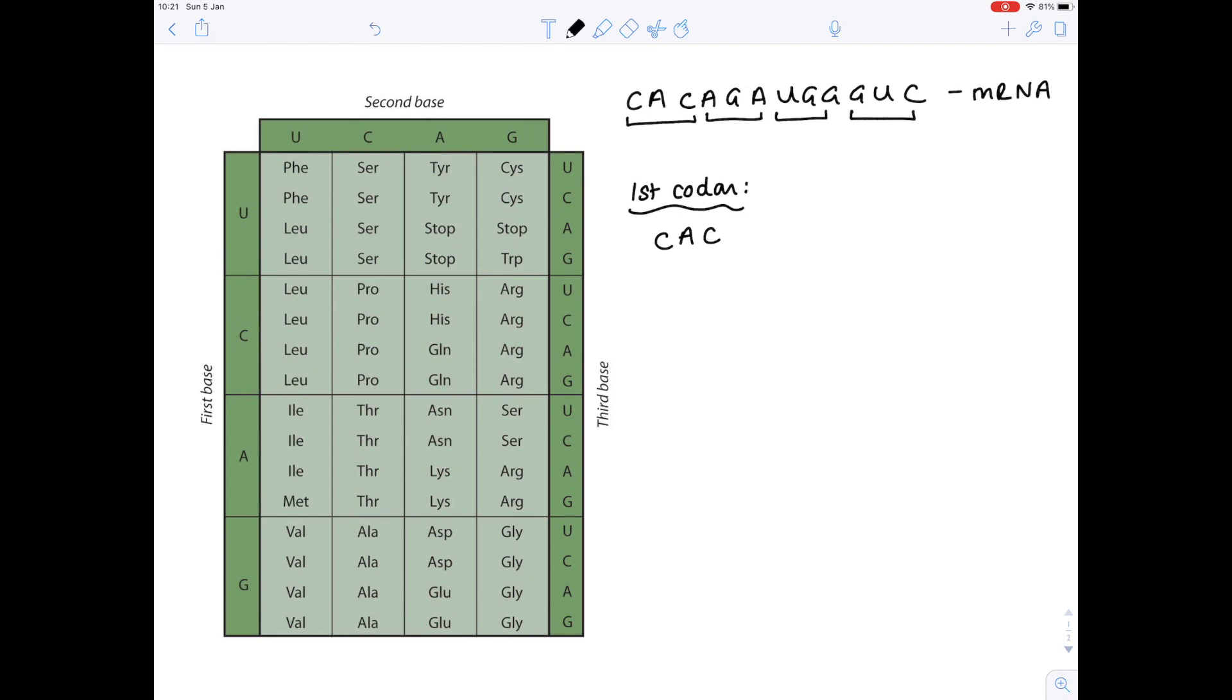So if we look at our codon, we can see that the first base is C. So I look along first base, and I know we're looking at C. So what does that tell me? Well, I know my amino acid that will be generated will exist somewhere within these two lines. Then the second base is A. So I know therefore that I'm narrowing down my options and that my amino acid will exist within this box. And then lastly, how do I work out which amino acid it is? Well, I look at my third base, which is C, and that tells me therefore that it's His, which is histidine.